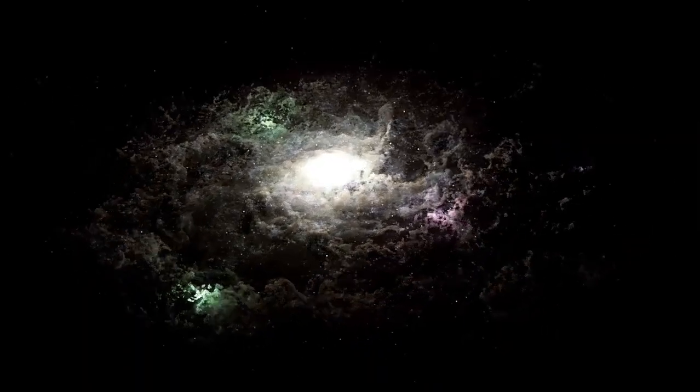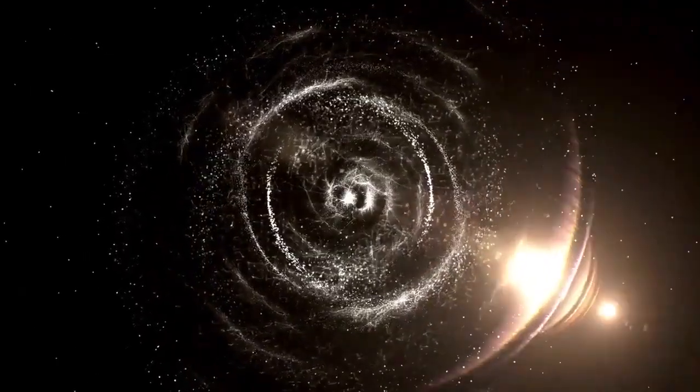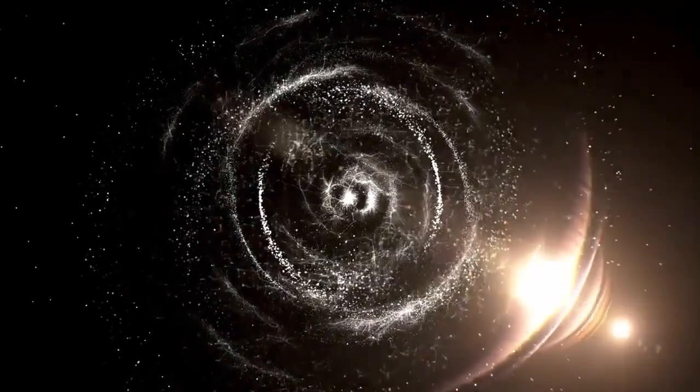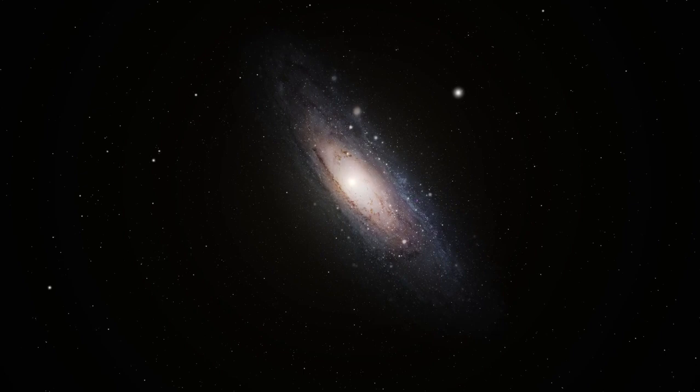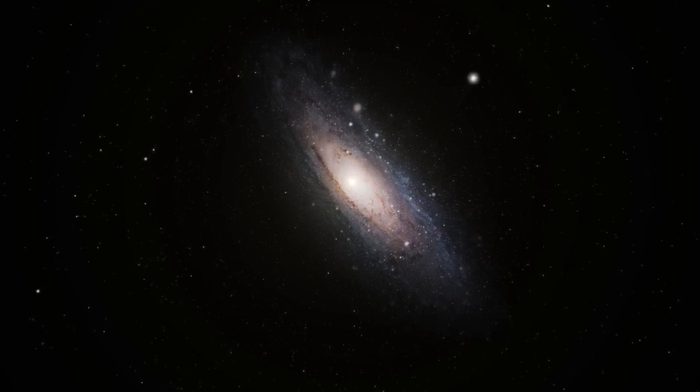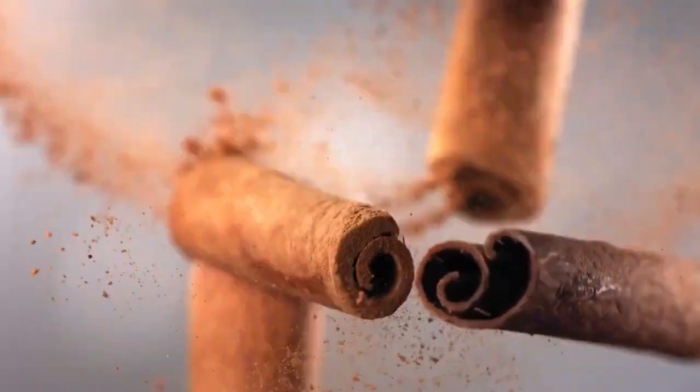The Pinwheel Galaxy Messier 101, located 21 million light-years away, boasts a diameter of 170,000 light-years, its spiral arms adorned with countless stars. These galaxies are just a glimpse of the countless others in our universe, each with distinctive characteristics, compositions, and distances.